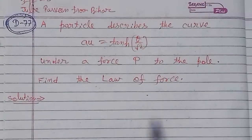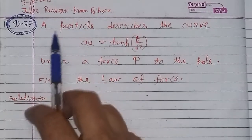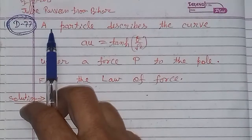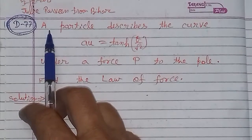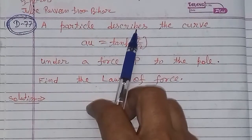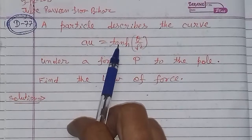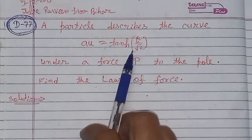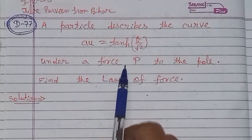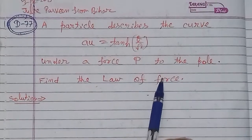Bismillahirrahmanirrahim. On the demand of Julie Parveen from Bihar, yeh problem dynamics ki hai, aur chapter hai central orbit. A particle describes the curve: u equals tan hyperbolic of theta upon square root 2. Under the force P to the pole, find the law of force.